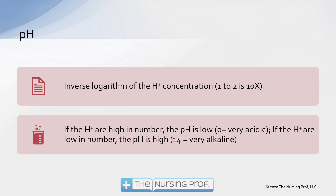One of our major forces controlling our pH is going to be the hydrogen ion. If there are lots of hydrogen ions — think of hydrogen ions as being the acid part — that means we're going to have a lot of acid. If there's not many hydrogen ions, that means we're not going to have a lot of acid and we'll be very alkaline.